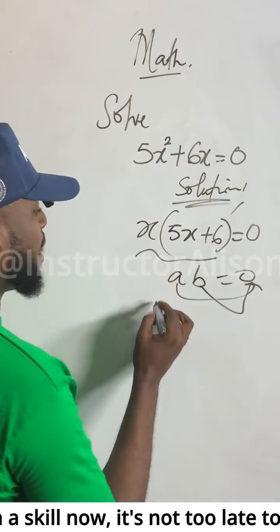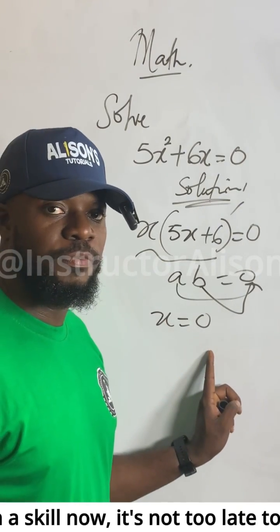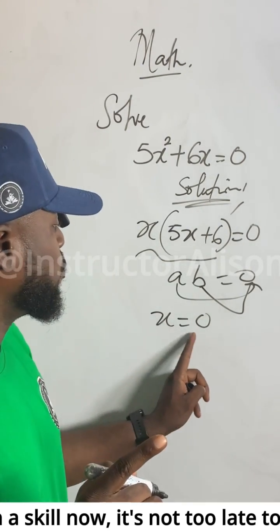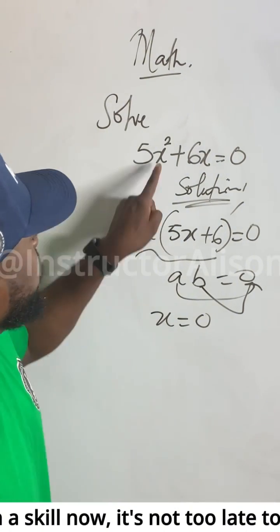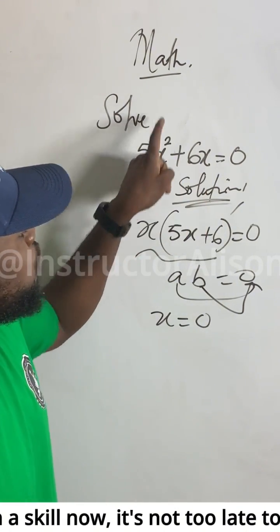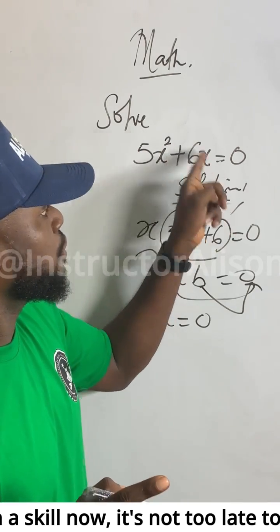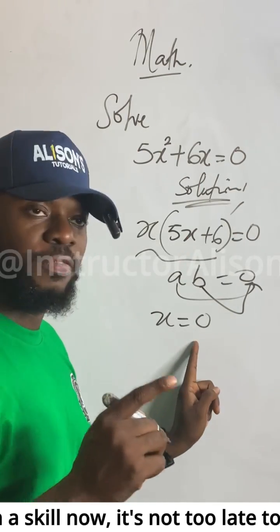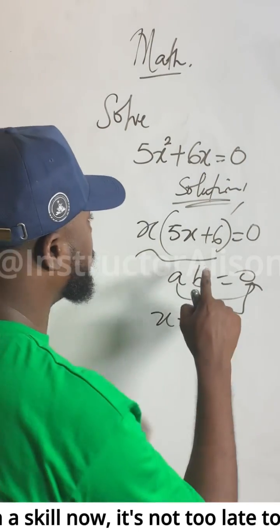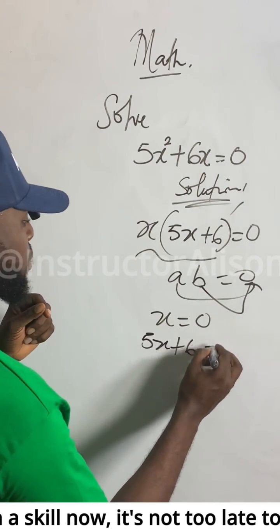...this first x will be equal to zero — that gives me one possible value of x. I know x equal to zero will work: if I carry zero and put it here, five times zero squared gives you zero, and six times zero gives zero, plus zero gives you zero. So that is one of the possible values.